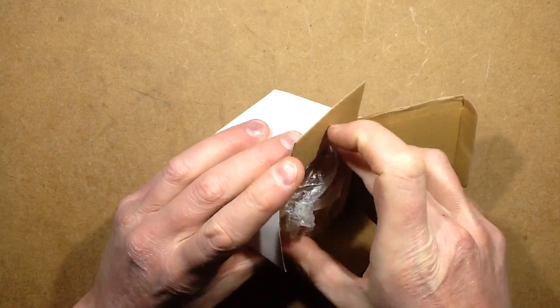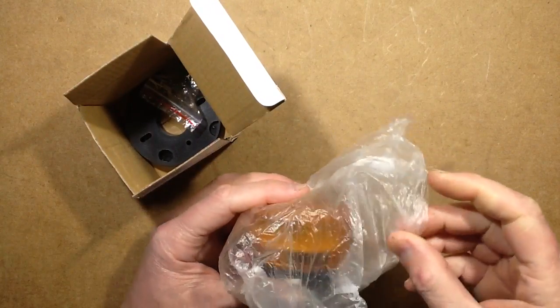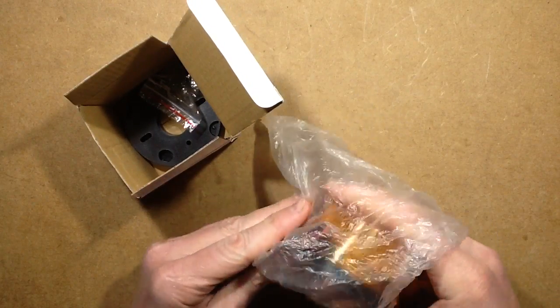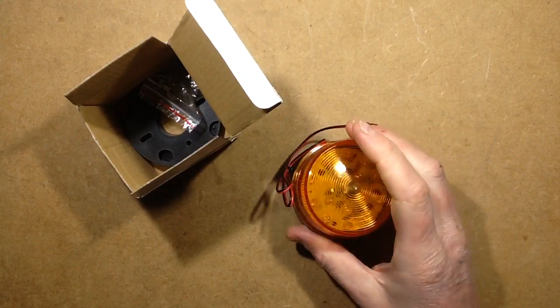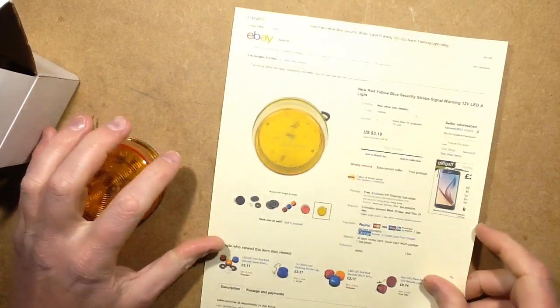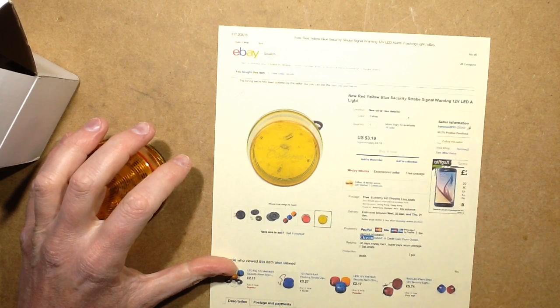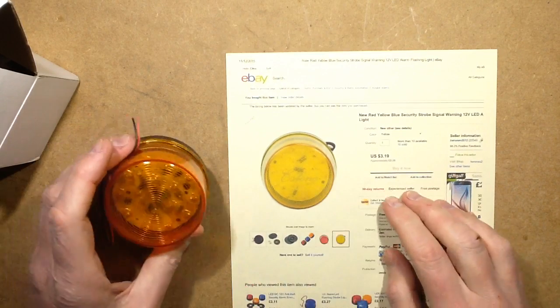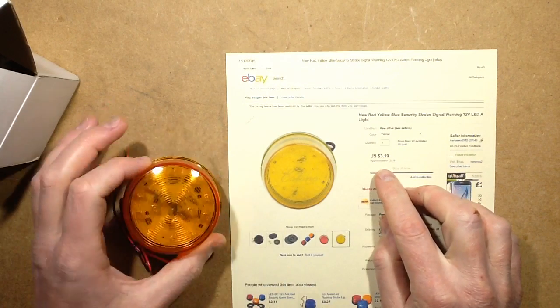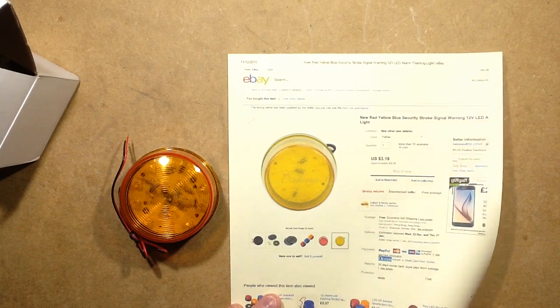Yet another device to take to bits for the weekend. This is a LED strobe, and this one came from a supplier on eBay called Heronio 2012. It wasn't very expensive at all, certainly compared to the old xenon strobes which it's based on. It was £2.10 or $3.19 American dollars. Seems to be a very common thing on eBay.